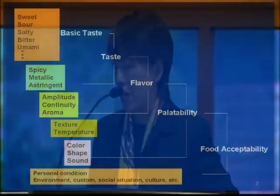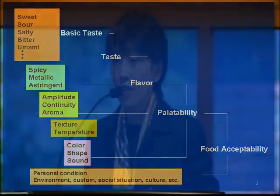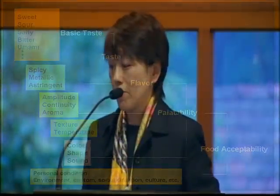Before talking about umami, I'd like to introduce how the taste of food is made up by various kinds of factors. For example, when you eat lunch or dinner with close friends or family members, you can fully enjoy the taste of food. But if you are sick or very nervous in front of people you are meeting for the first time, you cannot enjoy the taste of food. Color, shape, sound during eating, spicy taste, astringent taste, and aroma are also very important factors. Among these, the basic tastes — sweet, sour, salty, bitter, and umami — are the most important factors, because these five basic tastes directly stimulate the tongue.